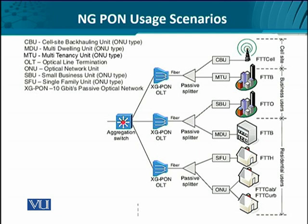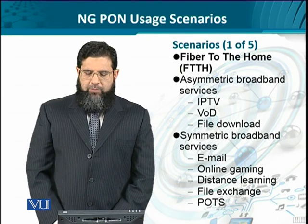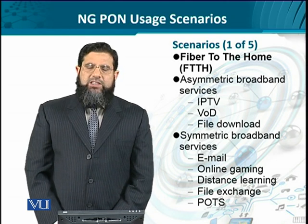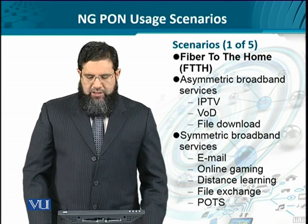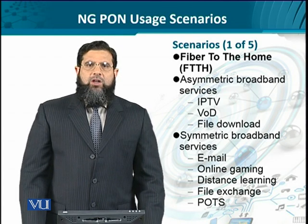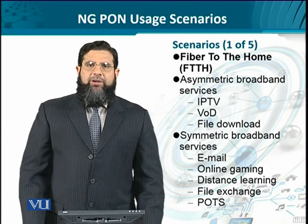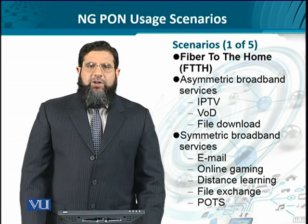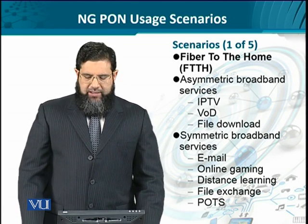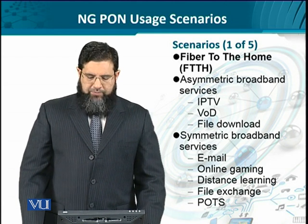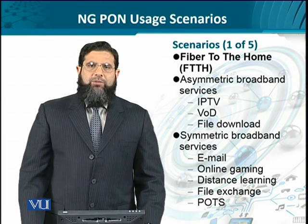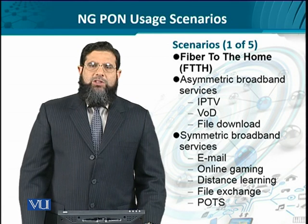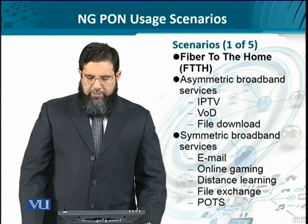We also have the OLTs and the aggregation switch. Fiber to the home can provide symmetric as well as asymmetric services. Asymmetric broadband services include IP television, video on demand, file download and upload. Symmetric services include email, online gaming, distance learning, file exchange between peers, and the plain old telephone system, since telephones and telephone exchanges can be required on either side.